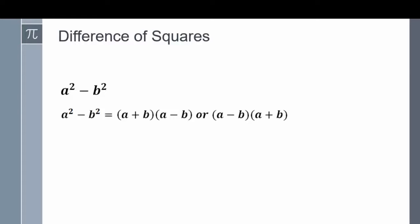In the difference of squares, we basically have a squared minus b squared, where a is a perfect square and b is a perfect square, and these two quantities are being subtracted. When factoring them, a shortcut is to write a twice, once in each factor, and write b twice, once in each factor, and put a plus sign in one of the factors and a minus sign in the other. This works because a times a gives a squared, and positive b times negative b gives negative b squared.